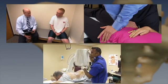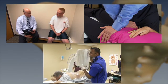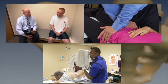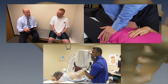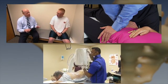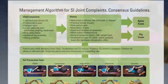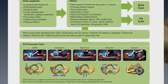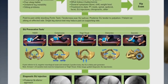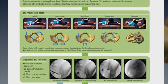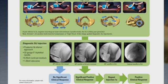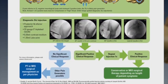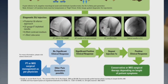Once the diagnosis of SI joint pathology is confirmed, there are several steps that should be taken. To effectively diagnose the SI joint, it's important to use the appropriate SI joint management algorithm, which includes provocative testing and diagnostic joint injections.